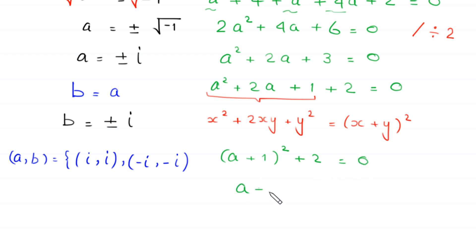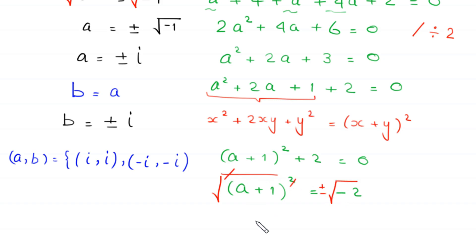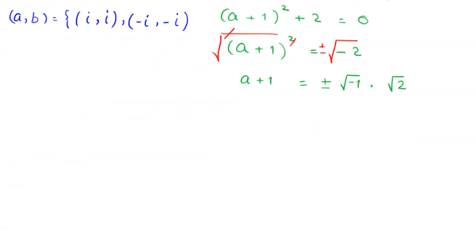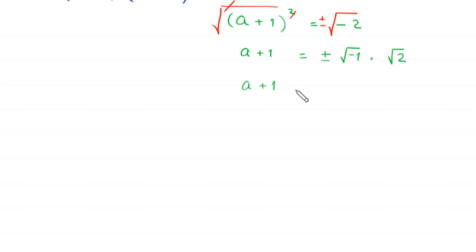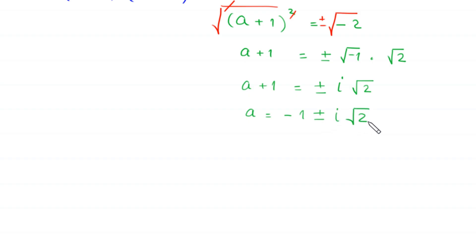So (a plus 1) squared plus 2 equals 0, which gives (a plus 1) squared equals negative 2. Taking the square root of both sides: a plus 1 equals plus or minus the square root of negative 2, which equals plus or minus i times the square root of 2. Therefore a equals negative 1 plus or minus i times root 2.